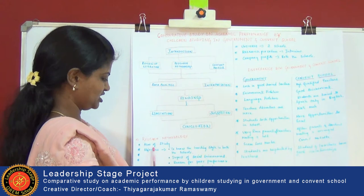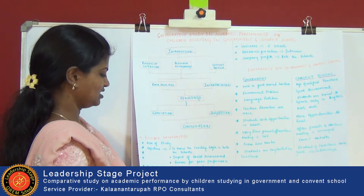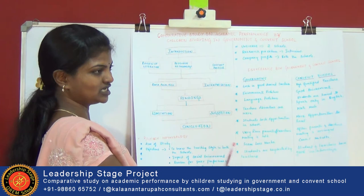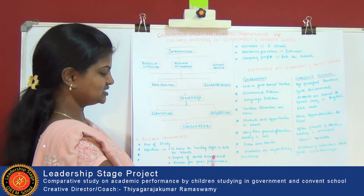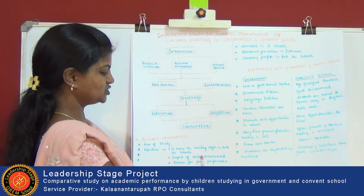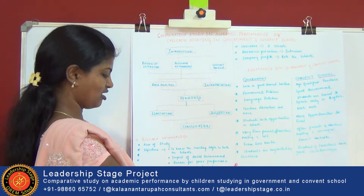I have stated the work of the research methodology. Research methodology covers the aims of the study. My aim is to find what is the reason that government schools cannot perform well academically. Objectives include: to know the teaching style in both these schools, the impact of social environment, and the reason for poor performance by government school students.